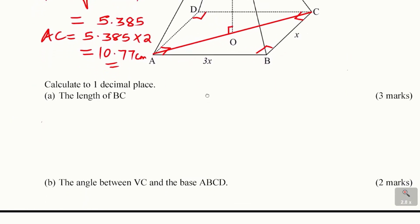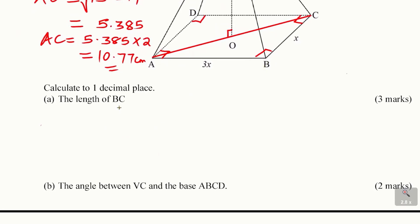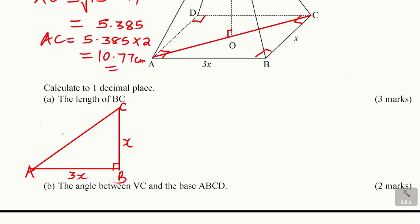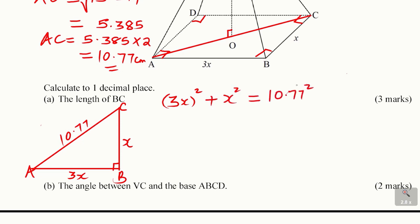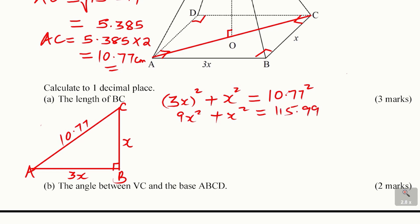Triangle ABC has a right angle at B. BC is X, AB is 3X, and AC is 10.77. Using Pythagoras' theorem: 3X squared plus X squared equals 10.77 squared. So 9X squared plus X squared gives 10X squared equals 115.9929.